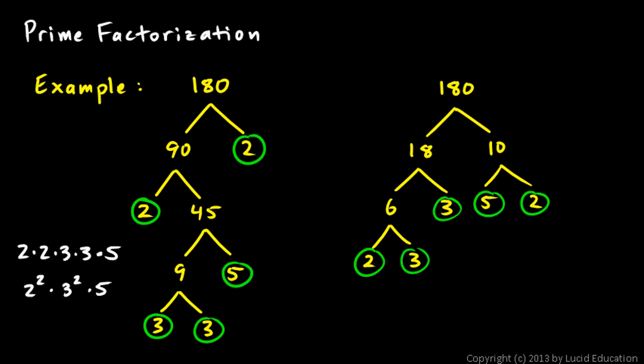And because the order doesn't matter when we multiply, we say there is one answer to the problem. This isn't two different answers that I've shown you here—this is two different ways of arriving at the one answer, the prime factorization of 180. And every composite number will have exactly one prime factorization. Again, the goal is to get all of these numbers multiplied together to give you the original number, and all of those numbers end up being prime numbers.